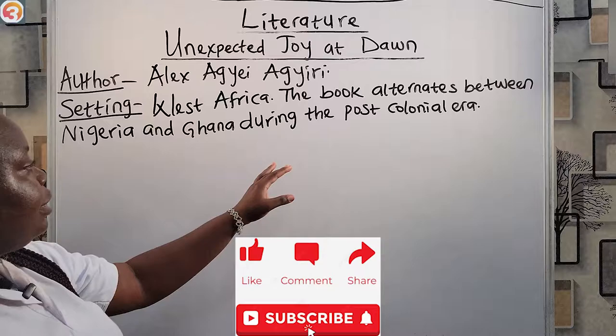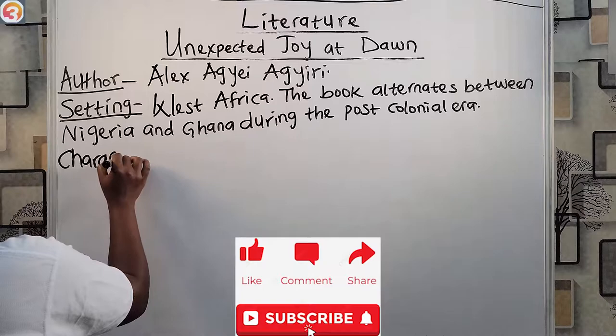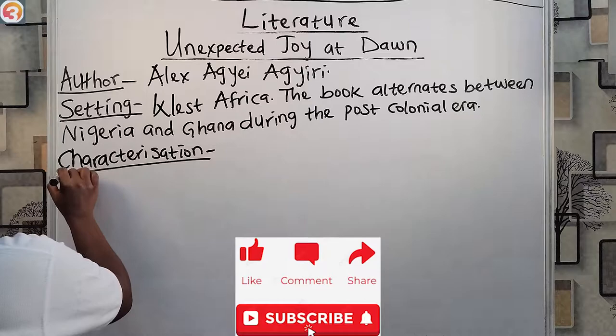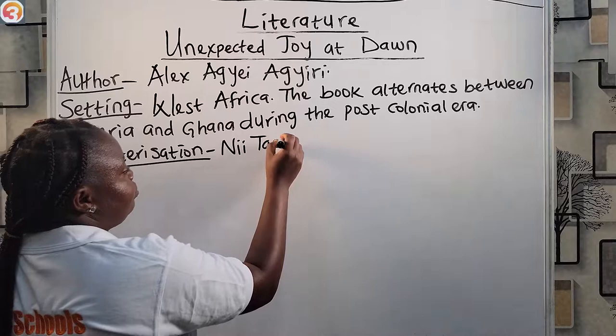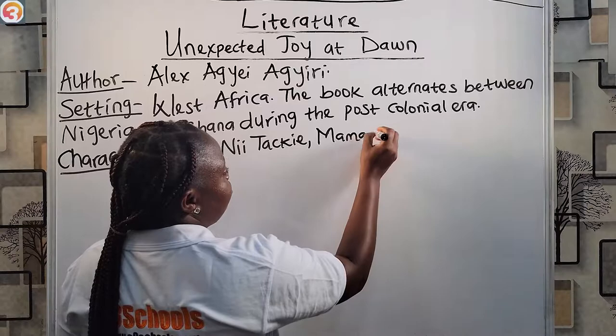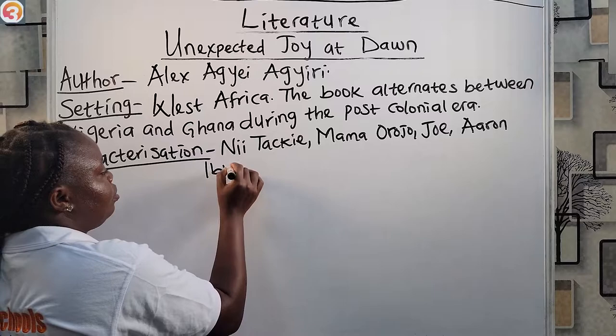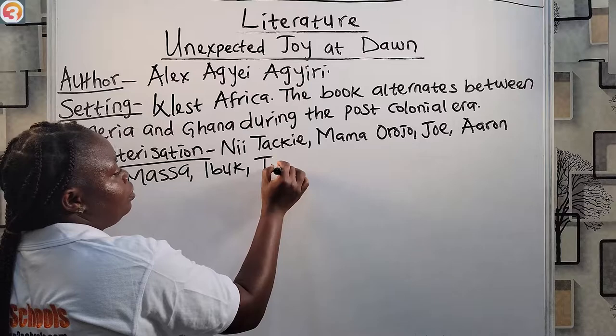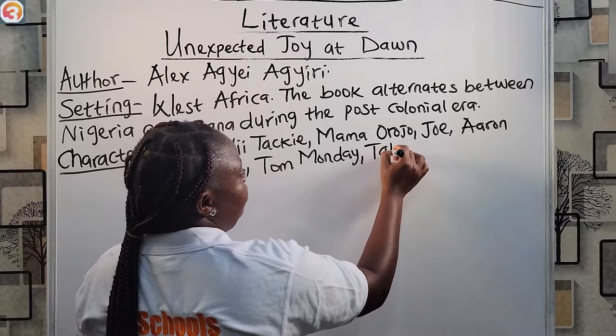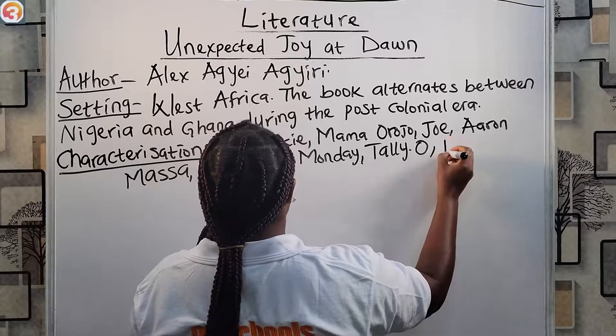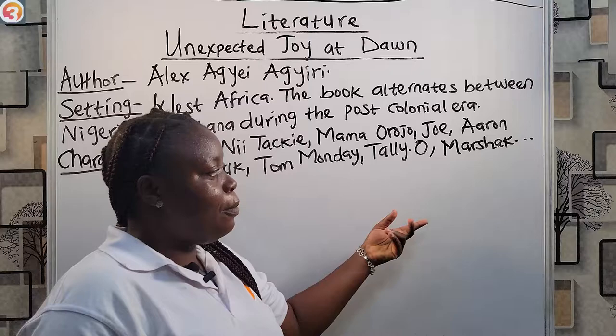Then we look at the characterization. Major characters in the book include Nitaki, his sister Mama Urujo, Joe, and Aaron. Minor characters include Ebook, Masa, Tomonde, Talio, and Mashak, to mention but a few. These are the characters in the book 'Unexpected Joy at Dawn.'